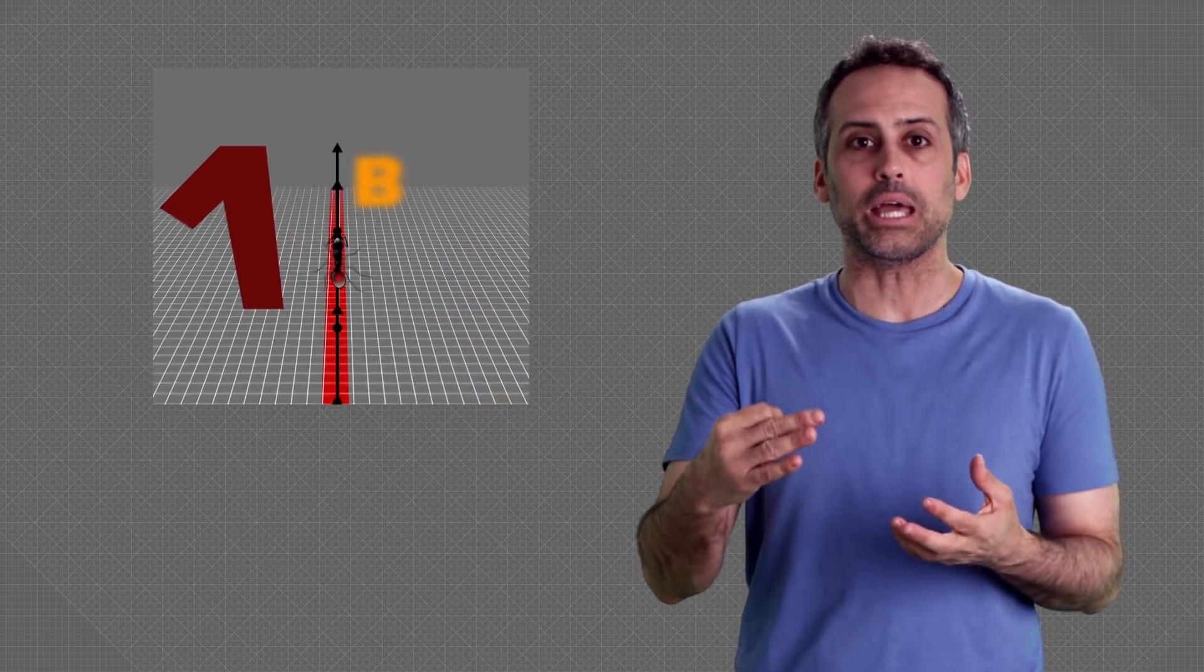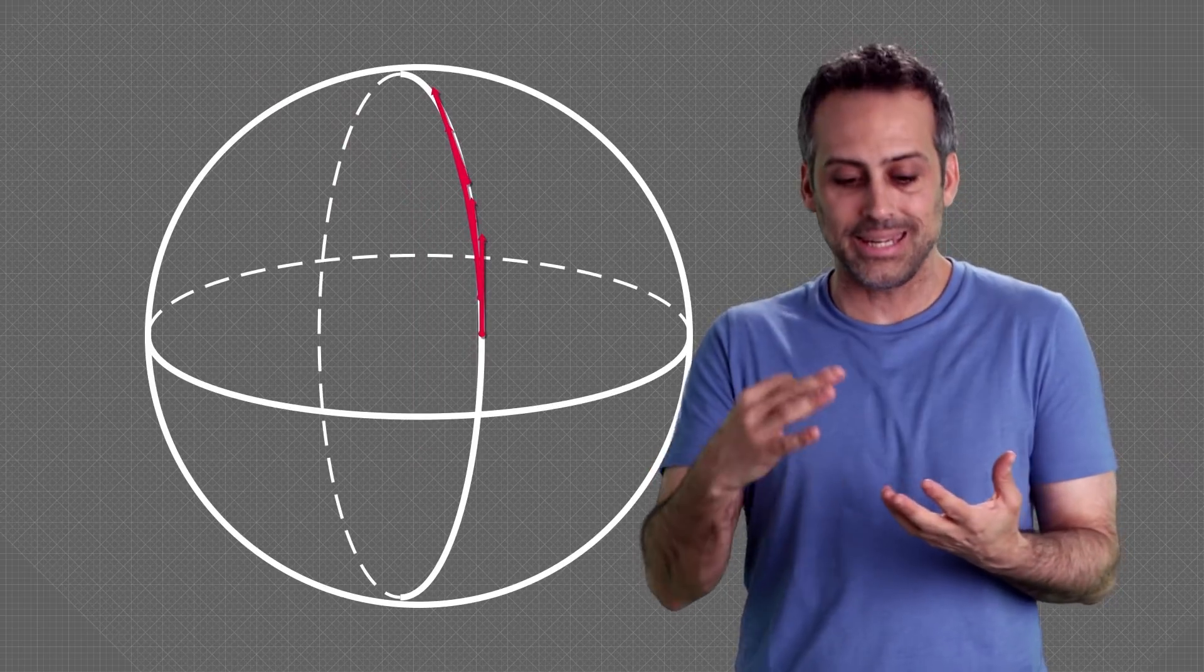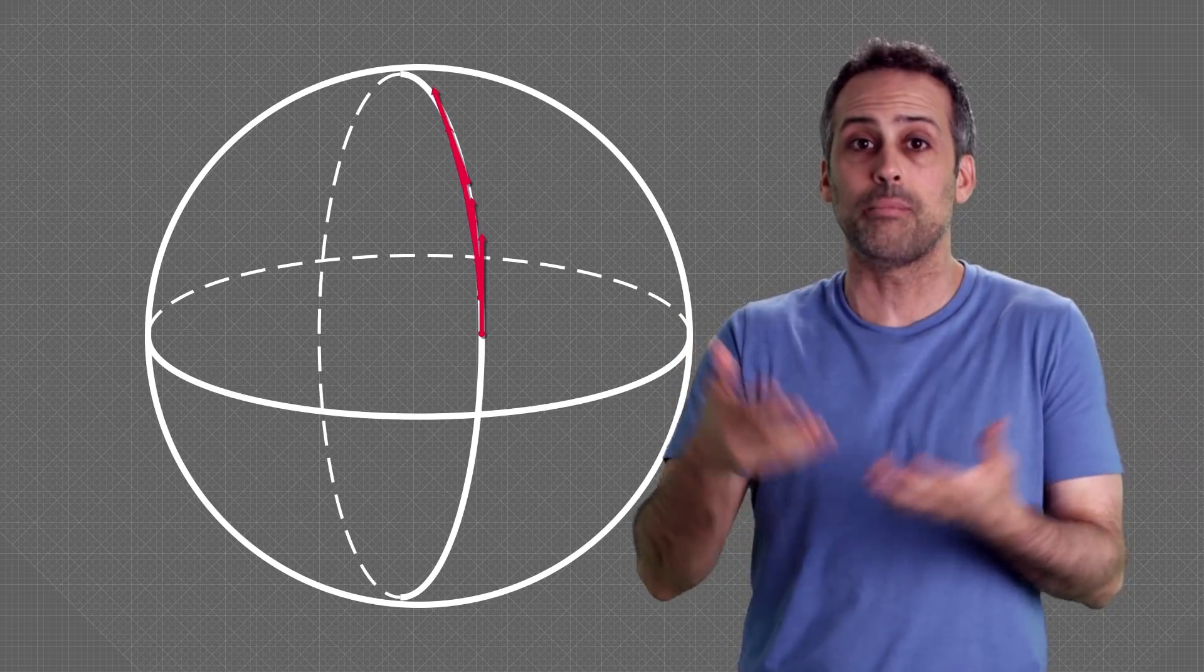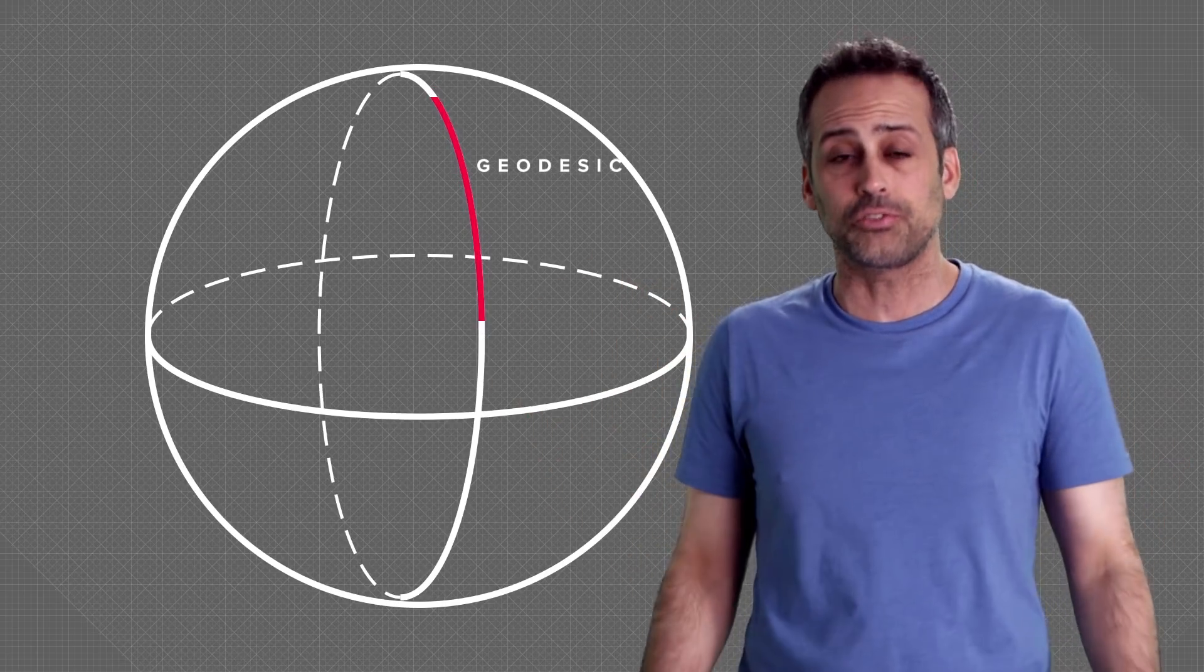In the episode on curvature, we saw that tiny patches on the surface of a sphere look like the Euclidean plane. Since we know how to draw straight line segments in a plane, then we know how to do that in tiny patches on the sphere. So draw tiny straight segments over a series of tiny patches, join them, and voila, you have a geodesic on the sphere.